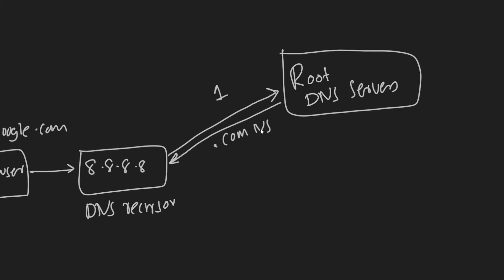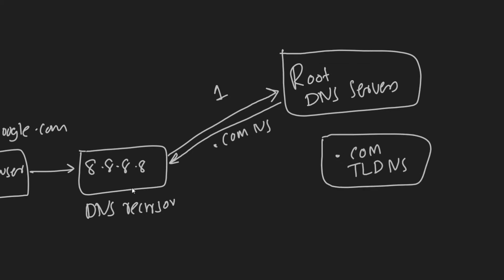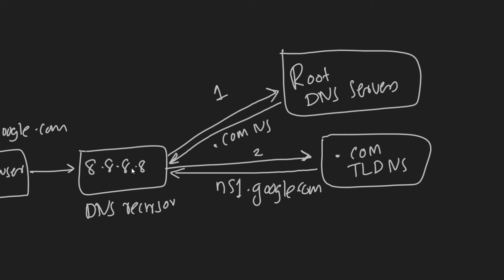The root DNS server responds with the .com TLD name server. Now the recursor has the IP address of the .com TLD name server, so it asks: what is the IP address of www.google.com? The TLD server says: I don't know the IP address, but I know where you can find them, and it responds with the name server of the google.com domain — for example, ns1.google.com.